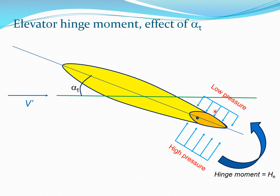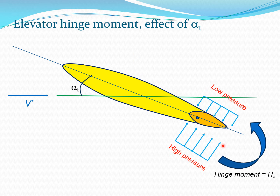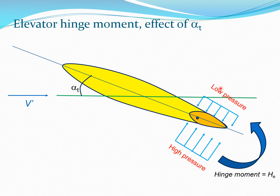Here I have shown the tail, and what we have done is moved the entire wing section by angle alpha_t, which is the angle of attack of the tail. In flight mechanics we deal with absolute angles, so these are measured with respect to the zero lift line. What happens is there is a pressure differential — lower pressure on top and higher pressure on bottom — and therefore a hinge moment acts on the elevator section, which we call H_e. It is likely to act in this direction because of the higher pressure below and lower pressure above.